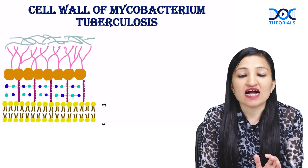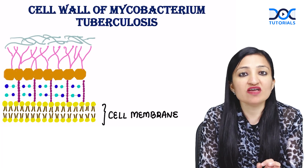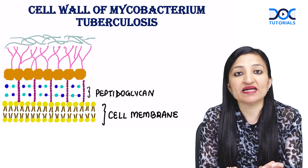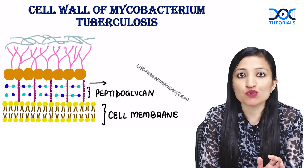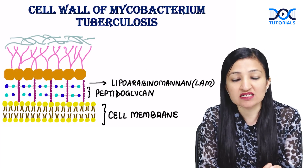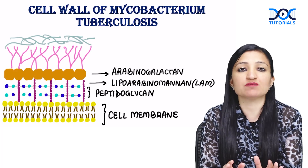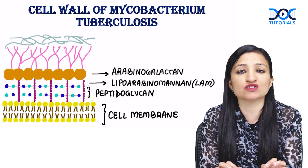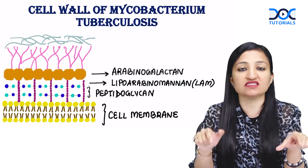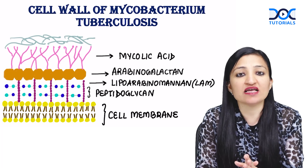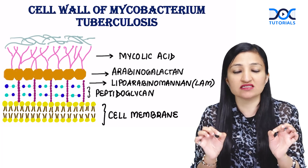So the cell wall looks like this. At the bottom we have got plasma membrane or cell membrane. Then we have got peptidoglycan layer which maintains the shape and rigidity of the cell. Then we have got a very special molecule called lipoarabinomannan, which actually acts like a bridge between the plasma membrane and something else known as arabinogalactan, which you can see as orangish blocks in this diagram. Then we have got a very special layer called the mycolic acid layer, which is made up of long chain fatty acids.